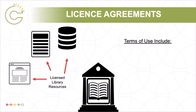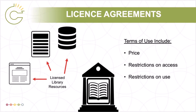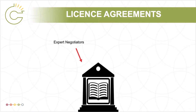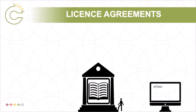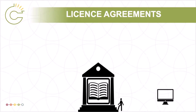The terms of use for these licensed resources include things like price — how much the university pays for access — who can access the database content (students, faculty, etc.), and what they can do with those articles and e-books (copy or share) and where or how. Most license agreements are negotiated by academic librarians for their institutions. These agreements allow for educational uses like posting copies of articles on a restricted learning management system, or including the content in a student assignment submitted directly to an instructor for grading. In most cases, these license agreements also allow members of the public to walk in and use the databases at a library workstation, but not access them from off-campus. Off-campus access is usually limited to members of the university community.